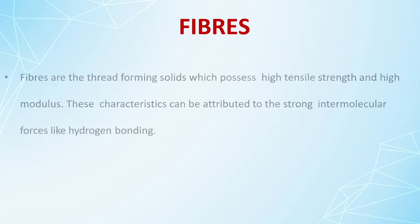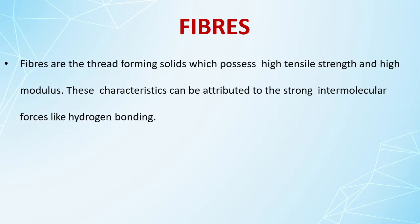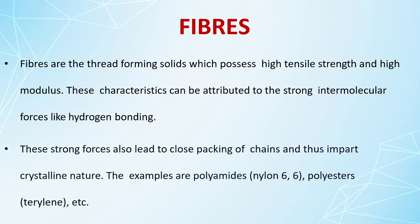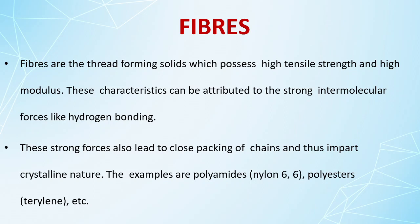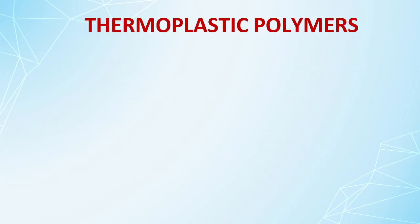Fibers are thread-forming solids with very high tensile strength and high modulus. These characteristics are due to strong intermolecular forces like hydrogen bonding, which also give them a crystalline nature. Examples include polyamides and similar compounds. In the case of fibers, compounds with bifunctional groups have very strong hydrogen bonding between -NH and -CO groups.